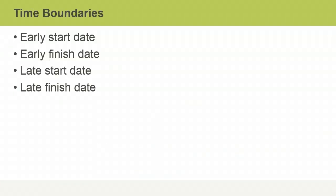The critical path method provides a way to calculate four time boundaries for each activity in your project: the early start date, the early finish date, the late start date, and the late finish date. A forward pass through the network diagram allows you to figure out the early start and early finish dates, and a backward pass lets you determine late start and finish dates.